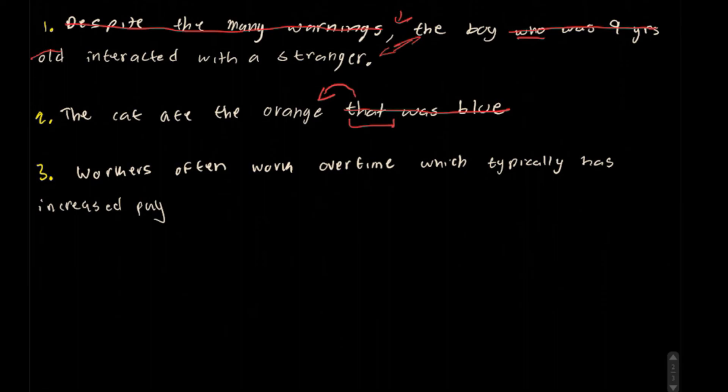Okay, question three. Workers often work overtime, which typically has increased pay. Okay, so this is, again, pretty simple. Which, again, relative pronoun. We can just eliminate this portion of the sentence. Again, this is relative to the overtime, describing the overtime. So, workers often work overtime. That's basically the sentence there.